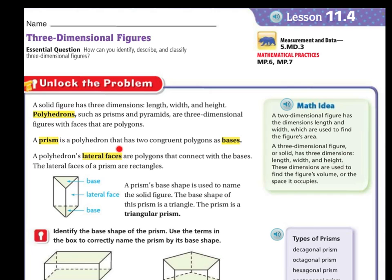A prism is a polyhedron that has two congruent polygons as a base. A polyhedron's lateral faces are polygons that connect the base. The lateral faces of the prism are rectangles. So if you look here, here's my lateral faces here, and the base of this one is a triangle. Therefore, it's a triangular prism. So a prism's base shape is the name that they use for the solid figure. So a base shape of the prism is a triangle, therefore this prism is a triangular prism.